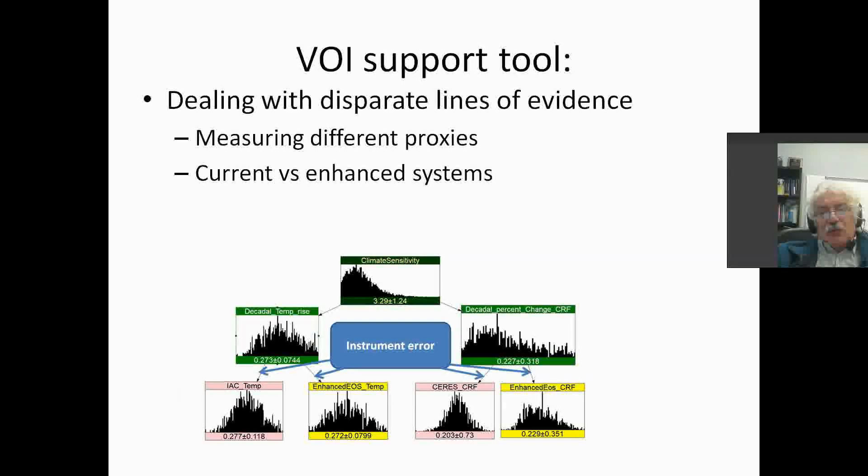The engineers at NASA have been developing enhanced systems to measure these proxy variables. All of these measurements will be perturbed by measurement error, like calibration drift on orbital decay. However, the enhanced systems are designed to be much more accurate.